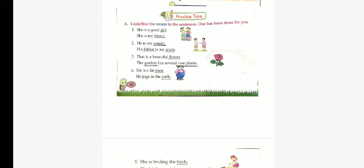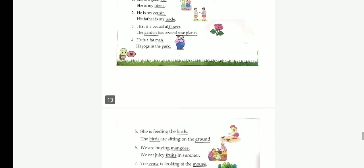Third one. That is a beautiful flower. The garden has several rose plants. Nouns: Flower, garden, rose plants. Fourth one. He is a fat man. He jogs in the park. Here, noun: Man and park. Beautiful flower. Beautiful is adjective. Flower noun. Fat man. Fat is adjective. And man, noun. Man and park.